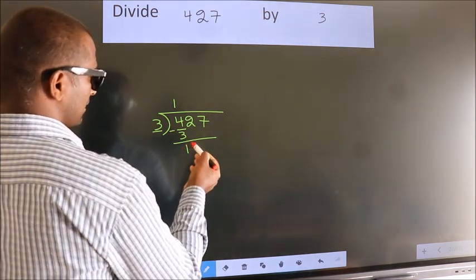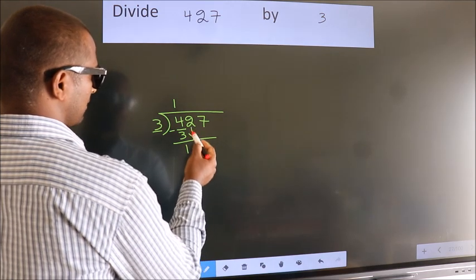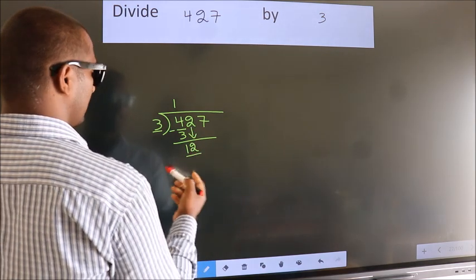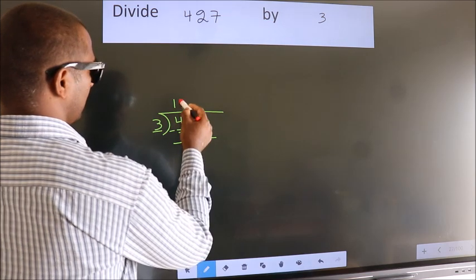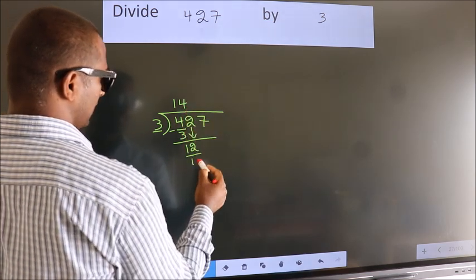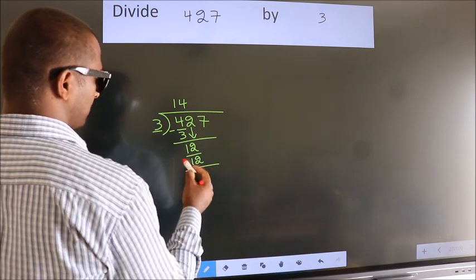After this, bring down the beside number. So 2 down. So 12. When do we get 12? In 3 table. 3 fours, 12. Now we subtract.